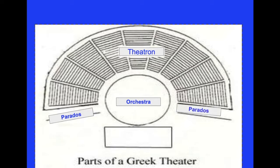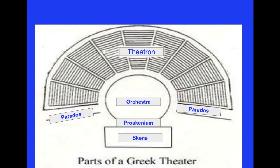Then we have our two passageways — the paredos. The paredos was where the audience came in, but also during the play, anyone coming from a foreign land would enter through them. Then we have the proscenium — the space in front of the building structure where they would do set and things, but very minimal. It's not like today where we have huge giant sets. It was very simple back then. And the skene is this little building where actors could hide stuff or go behind when they're not on stage.